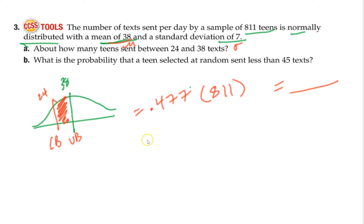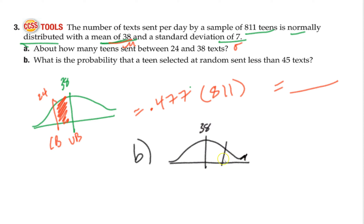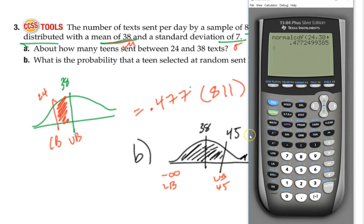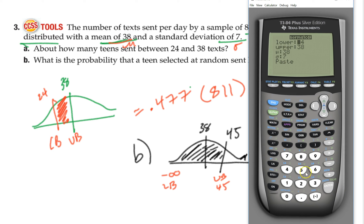Part B: What is the probability that a randomly selected teen sends less than 45 texts? My mean is 38, and 45 is to the right. I want everything to the left of 45. On the calculator, my lower bound goes all the way to the left — that's negative E99, which is essentially negative infinity. We use the second EE button and type 99. My upper bound is 45, mean is 38, standard deviation is 7.